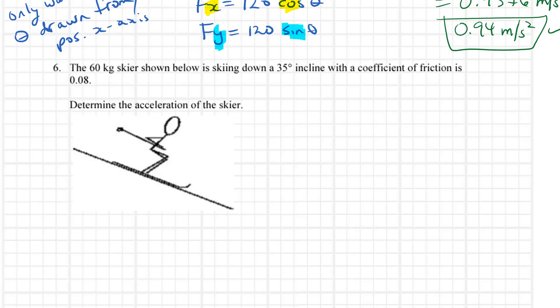Question 6. There is a skier going down an incline, and we are supposed to find the acceleration of the skier.